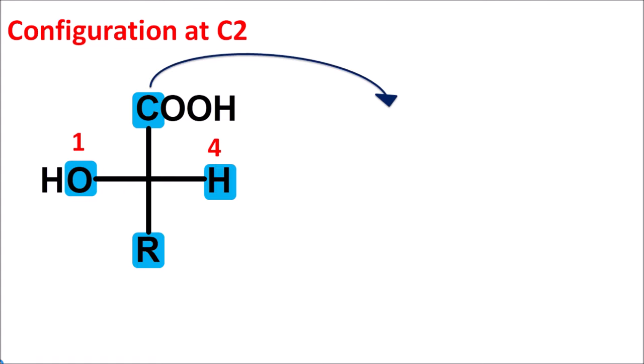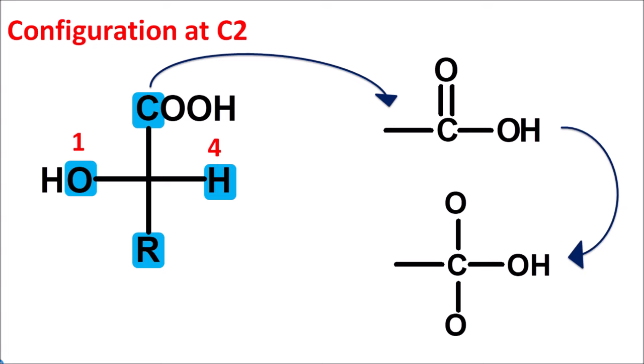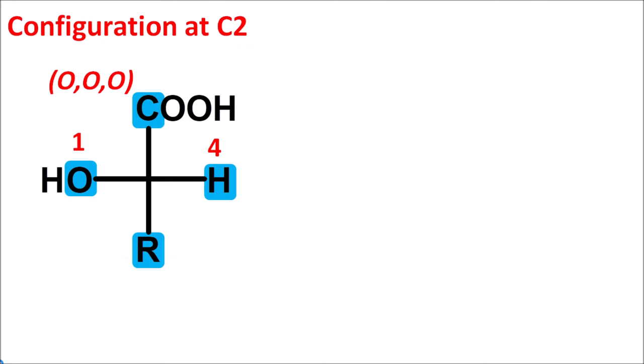Let us explore the carboxylic acid which is written as COOH. In the carbonyl group, the carbon is attached to oxygen by a double bond. By using the sequence rules, double bonds are duplicated and triple bonds are triplicated. So here the carbon-oxygen double bond is duplicated such that we consider carbon is attached to two oxygens by single bonds. Then the third group is the OH group where oxygen is attached to carbon. So in this carboxyl group, carbon is further attached to three oxygen atoms, which can be written as oxygen, oxygen, oxygen. Next one is the R group.